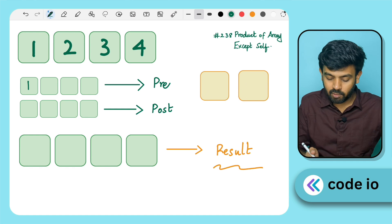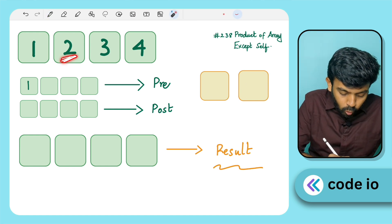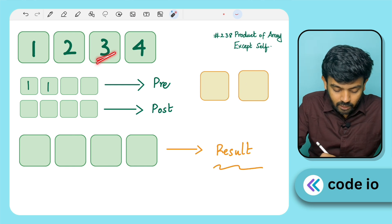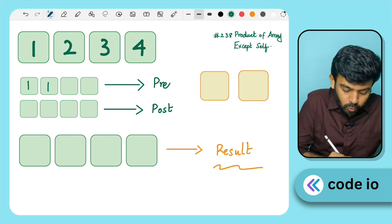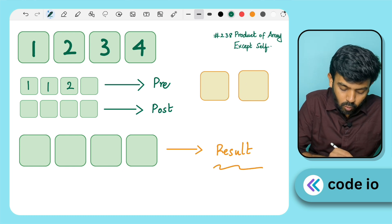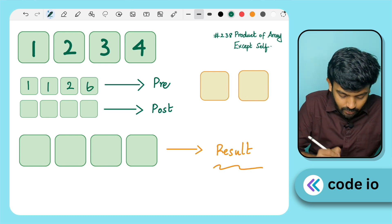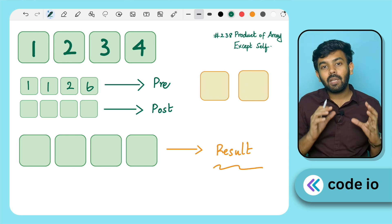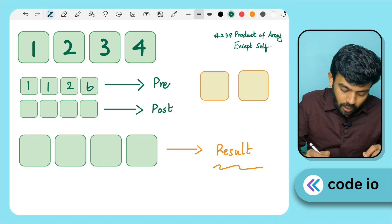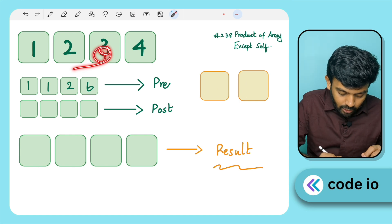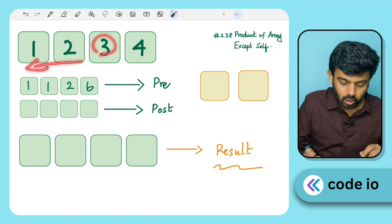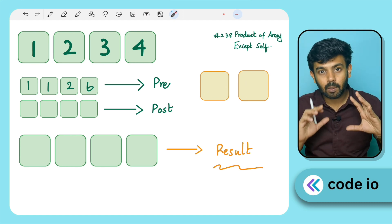Let me explain the prefix product array. For the first element, there is nothing on the left, so its prefix value is 1. For the second element, the value is 1. For the third element, the elements to its left are 1 and 2, so 1 × 2 = 2. In the pre-array, for any element, it holds the product of all elements to its left — so for element at index 3, we store 1 × 2 = 2.